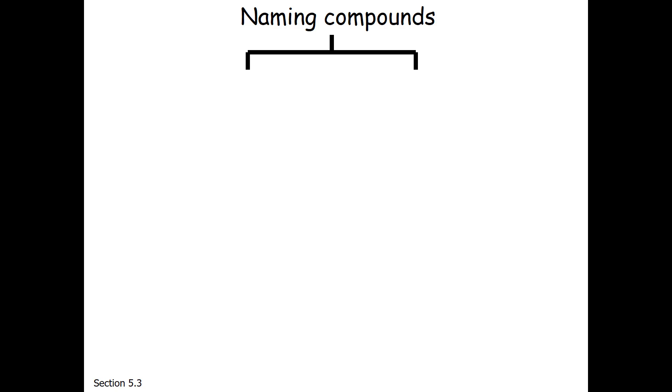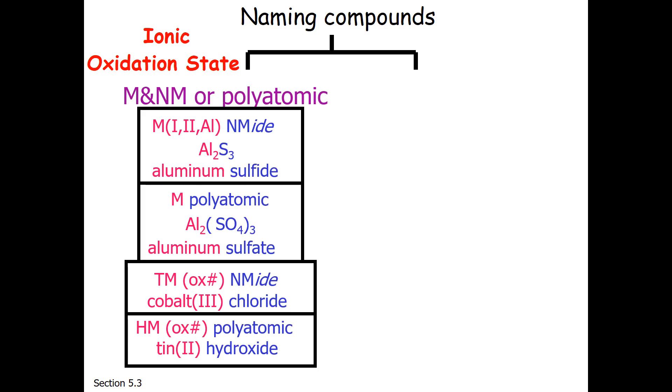Naming of compounds can go down several branches depending on what type of compound it is. For ionic compounds, oxidation state is key. So if you have a metal with a nonmetal or some combination of polyatomic ions and metals or nonmetals, naming conventions were covered in previous lectures.